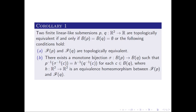We also prove that two finite linear-like submersions P and Q are topologically equivalent if and only if their bifurcation sets are empty or the following conditions hold: first, the respective regular foliations of P and Q are topologically equivalent; and second, there is a monotonous bijection sigma between the bifurcation sets of P and Q such that a certain condition holds for each bifurcation value of Q, where H is an equivalent homeomorphism between the regular foliations of P and Q.